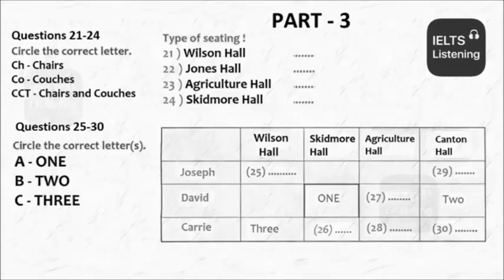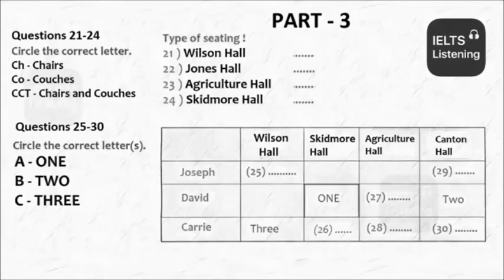Yeah, they had chairs, couches, and tables to put your stuff on, and that lounge was full — there must have been 25 seats in there. Really? The lounge in Jones Hall, where I have my communications course, only has about 10 chairs. It's awful — we all just stand around or leave. Well, Agriculture Hall is next door. Their lounge is on the first floor and it has couches — about six of them, comfortable and hardly used at all. But don't go to the lounge at Skidmore Hall. It's just four chairs in the corner of the main walkway.